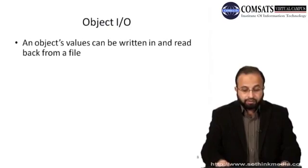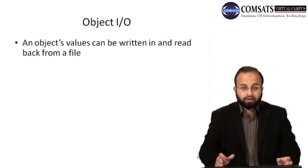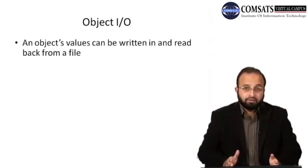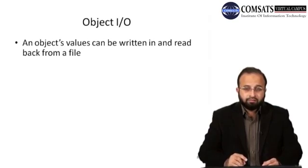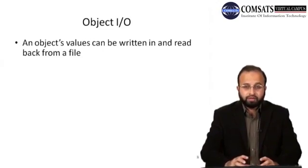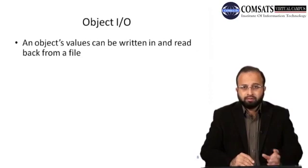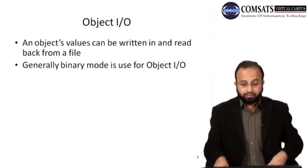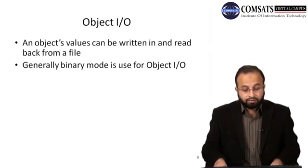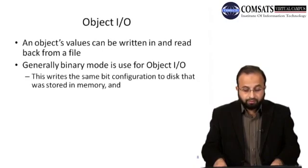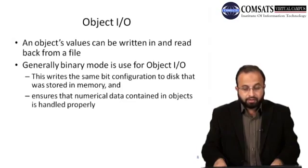For object I/O, an object's values can be written to and read back from a file. Similar to how structures are written with fwrite in C, in C++ we can write a complete object to a file. Binary mode is generally used for object I/O because it is more efficient — it writes the same bit configuration to disk as stored in memory, ensuring numeric data in objects is handled properly.